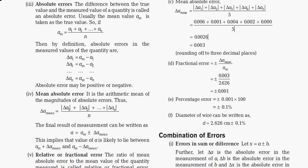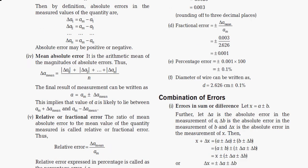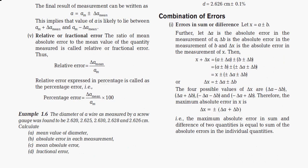For the fractional error, we use the formula: Δa_mean / a_m = 0.003 / 2.626, which gives ±0.001. For the percentage error, we multiply by 100 to get ±0.1%. Therefore, the diameter of the wire can be written as 2.626 cm ± 0.1%, where 2.626 is the mean value — the most accurate estimate.